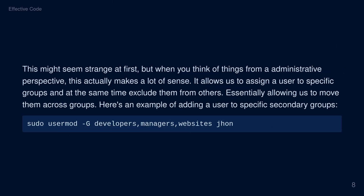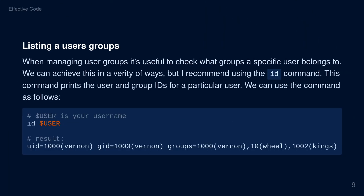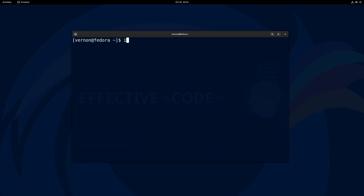Listing a user's groups. When managing user groups, it's useful to check what groups a specific user belongs to. We can achieve this in a variety of ways, but I recommend using the id command. This command prints the user and group IDs for a particular user. We can use it as follows: id followed by the username.